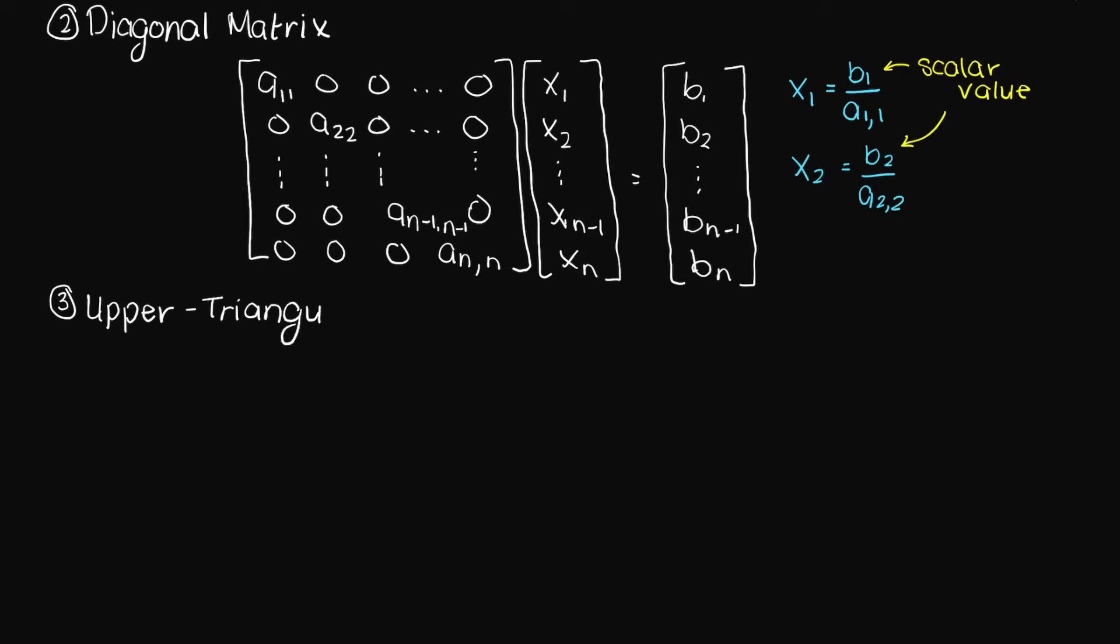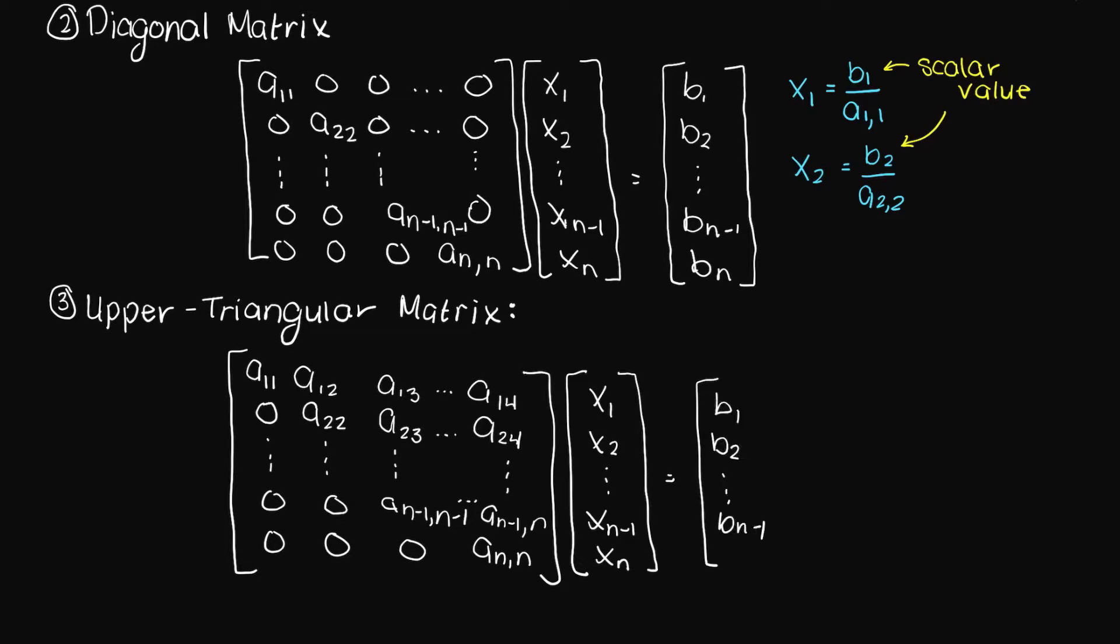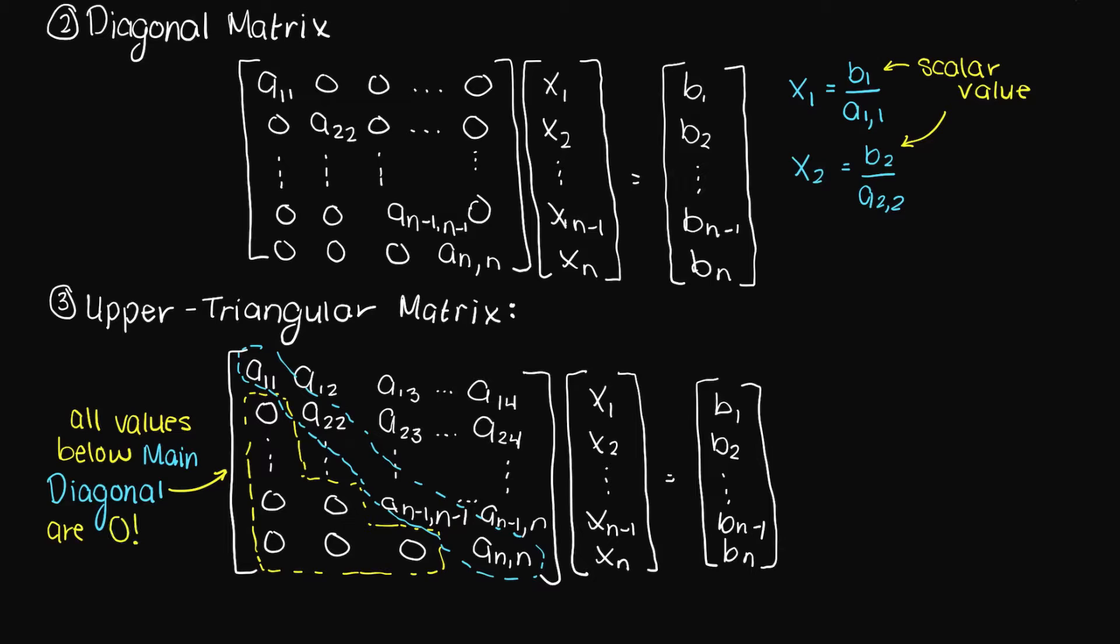The third special matrix is an upper triangular matrix. In this matrix, every value below the main diagonal is zero. When we have this type of matrix, the last row variable can easily be found, and then we can work our way up, solving each row as we go.